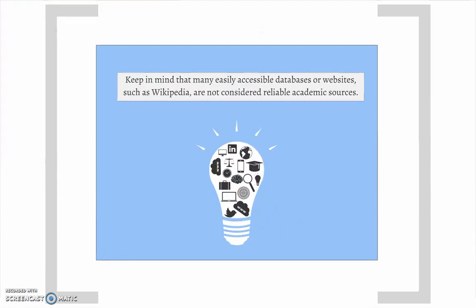Keep in mind that many easily accessible databases or websites, such as Wikipedia, are not considered reliable academic sources. However, they can be good places to begin your research because the information is generally easy to read. If you find relevant material from one of those sources, check the source's bibliography for reliable academic sources.